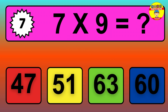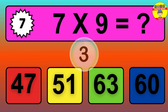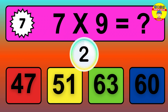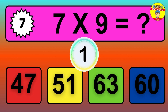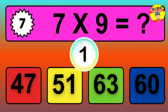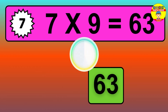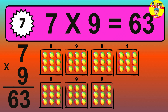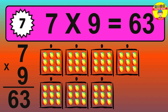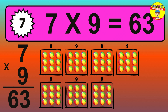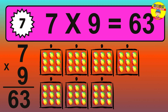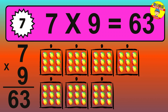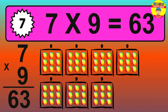Question 7. 7 times 9 equals what? The answer is 7 times 9 is 63. To calculate, we have 7 groups with 9 balls each one. So, how many balls do we have? 63 balls.